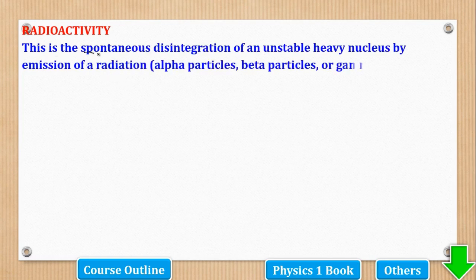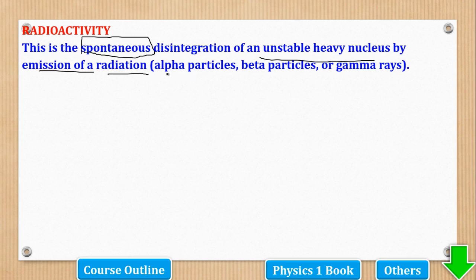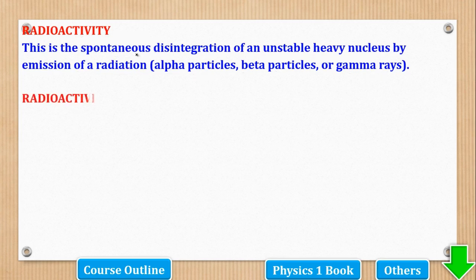Radioactivity is the spontaneous disintegration of an unstable heavy nucleus by emission of radiation. The radiation can be alpha particles, beta particles, or gamma rays. The disintegration is spontaneous — it can occur any time.